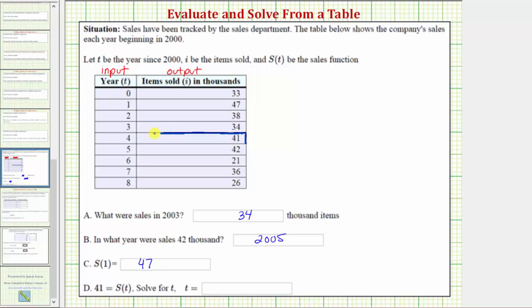And when the output or function value is forty-one, the input or t value is four, which gives us our solution. Our solution is t equals four. Again, because looking at the table, we know s of four equals forty-one. When the input or t value is four, the output or function value equals forty-one. I hope you found this helpful.